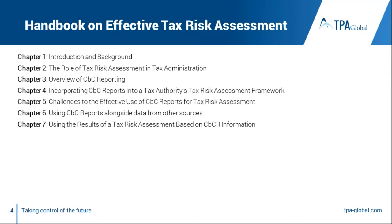The handbook on effective tax risk assessment is what we're going to be discussing. I won't go through each chapter, but chapters 4, 5, 6, and 7 are probably the more relevant ones — chapter 4 being key. What can a tax authority do to create its own risk assessment framework by looking at data received from all MNEs? There's a huge pool of data coming in, and the question is how they sort and analyze it to assess whether a company has been shifting income or reducing the tax base.